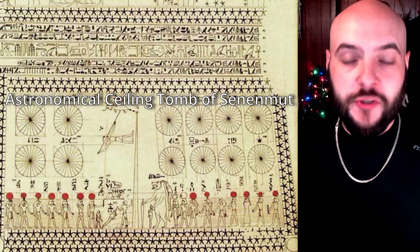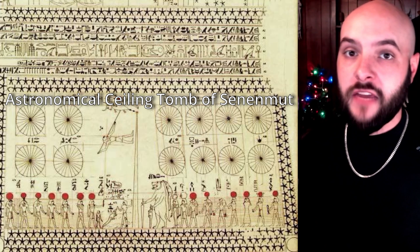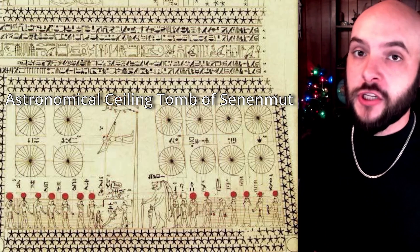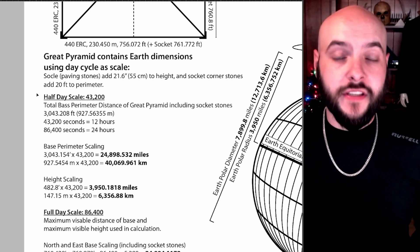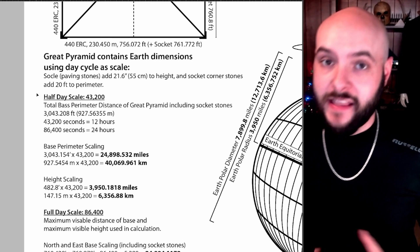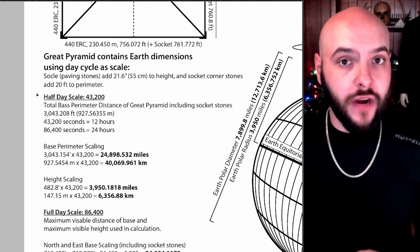So if the planet were to rotate for two seconds, the total distance it has moved equals the entire perimeter distance of the Great Pyramid. And we do know that the Egyptians had a concept of a 24-hour day from the astronomical ceiling we find in the tomb of Pharaoh Sinemut.